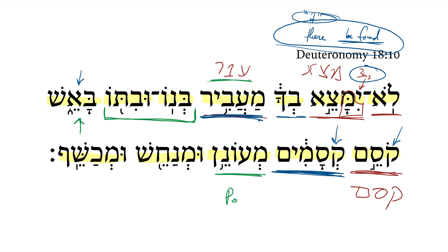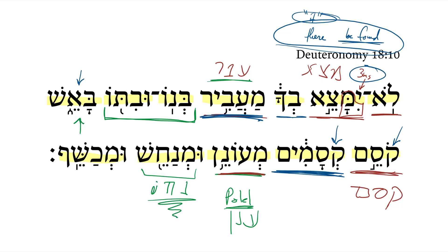Next, we get a polel — this is a polel participle. The verbal root is ayin-nun-nun, so it's a geminate; that's why we get polel, functioning a lot like a piel here. As a substantive participle, the definition would be: the one who tells fortunes. Next, we get another participle — this is a piel participle. The verbal root is nun-chet-shin, and this is going to be one who interprets omens. Again, that substantival participle: one who does the thing, one who interprets omens.